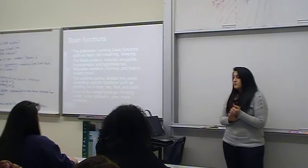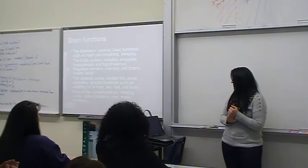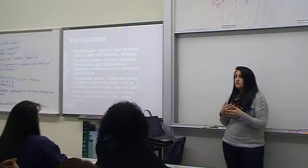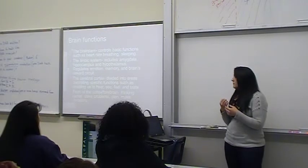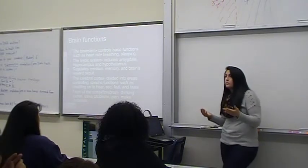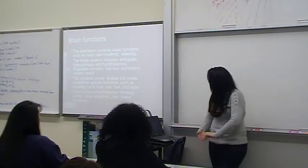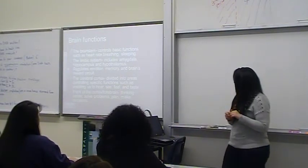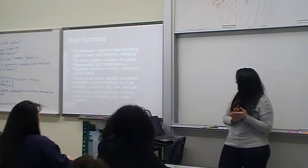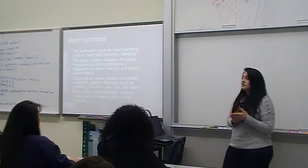It regulates emotion and gives the body reward, like when you eat chocolate you get rewarded. And there's the cerebral cortex, which is divided into areas that control specific functions such as hearing, seeing, and taste.